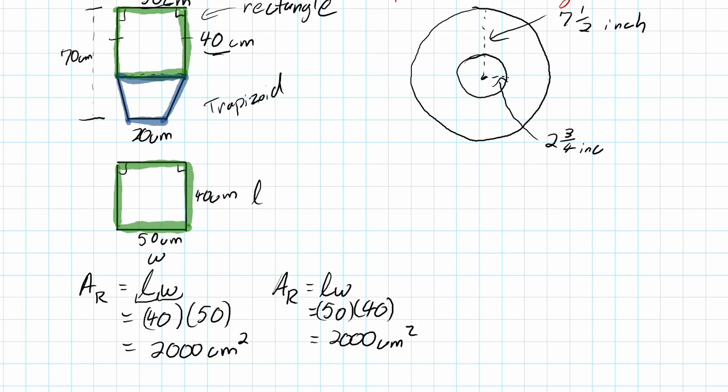Area of a trapezoid is a little bit different. Why don't you reference your sheet there? Area I believe it is a plus b divided by two times the height. There's a couple different versions of it, whichever one is more comfortable for you. My version looks similar to this, but this means the same idea.